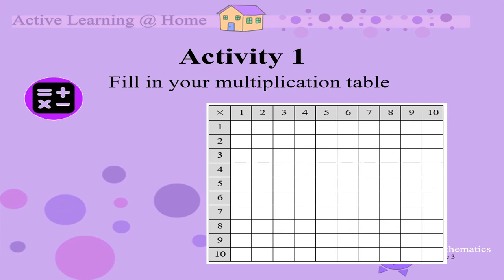Now you can fill in your multiplication table. Let's fill one block in together. Choose a block on your multiplication table. Find the number that's in the same row as this block. Find the number that's in the same column as this block. Now multiply the two numbers together. 4 times 5 is 20, so the number that goes in that block is 20.